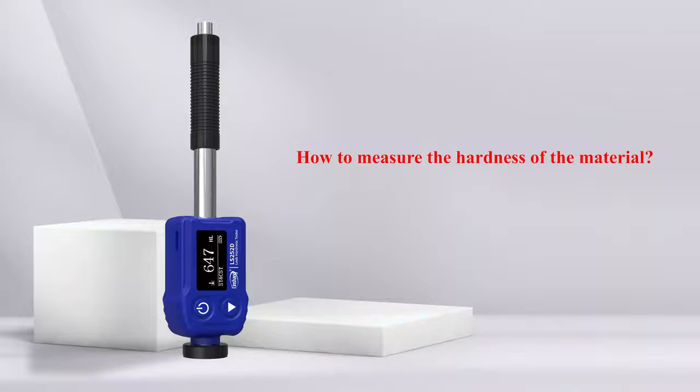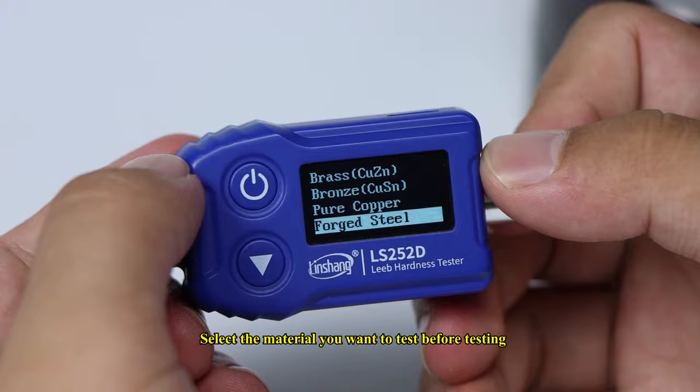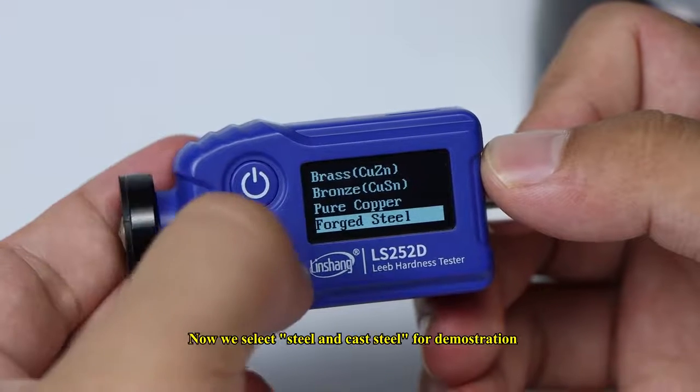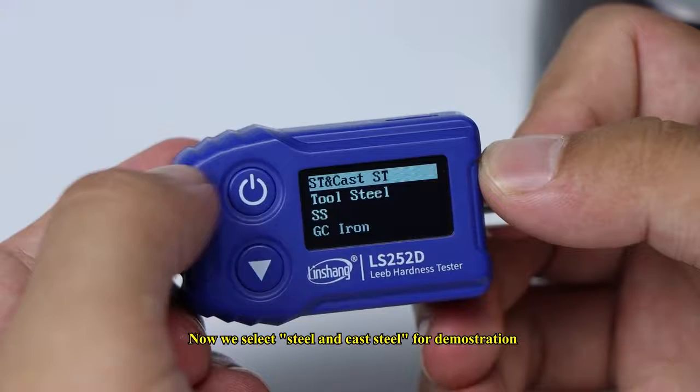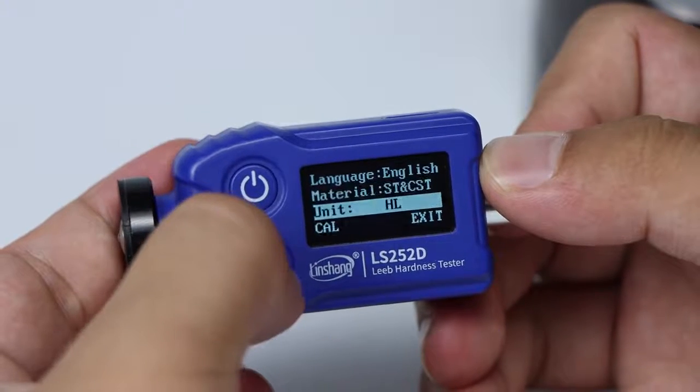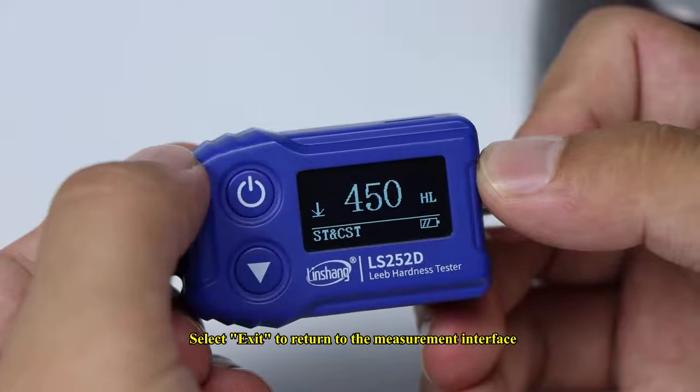How to measure the hardness of the material: Select the material you want to test before testing. Now we select steel and cast steel for demonstration. Select exit to return to the measurement interface.